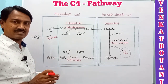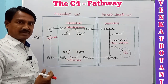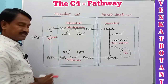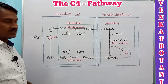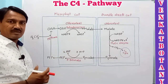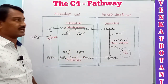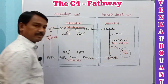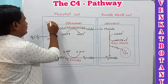In the C4 cycle, CO2 enters the plant in the form of HCO3 minus. Two cells are involved: mesophyll cells and bundle sheath cells, both containing chloroplasts. The mesophyll cell has a cytosol and a chloroplast, and the bundle sheath cell also has its own chloroplast.